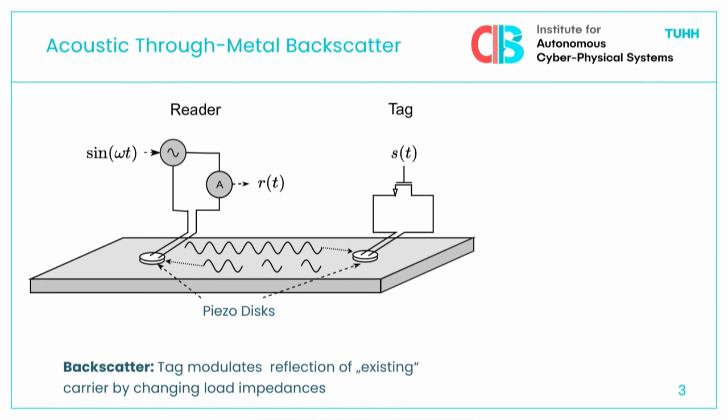Let me start by quickly introducing you to how acoustic backscatter communication works. A backscatter system consists of a reader and a tag. The reader generates a continuous carrier wave, and the tag can then use this carrier wave to harvest energy from it to power its own circuits. It can reflect or not reflect the wave to transmit data back, which has the advantage that the tag doesn't really need any oscillators or other high-power hardware.